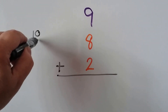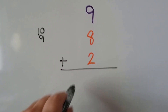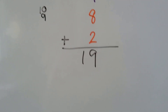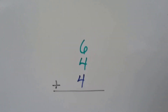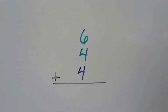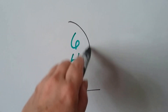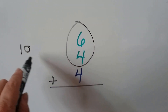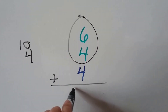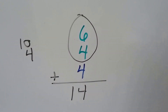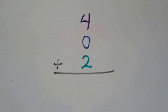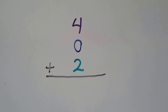Let's try this one. Do you see some compatible numbers? See the eight and the two — that makes ten, so we have ten and a nine, which gives us nineteen. How about here — do you see the compatible numbers? The six and the four are compatible, they make a ten, then all we have to do is add the four, giving us fourteen.